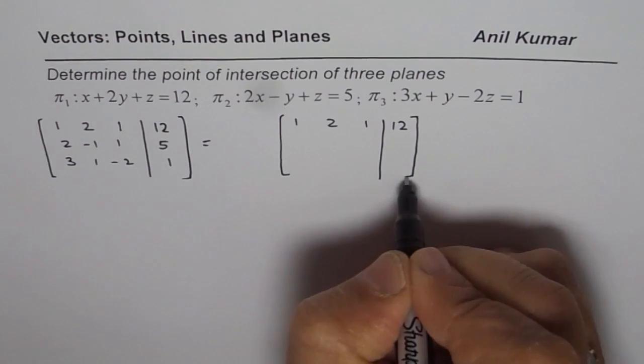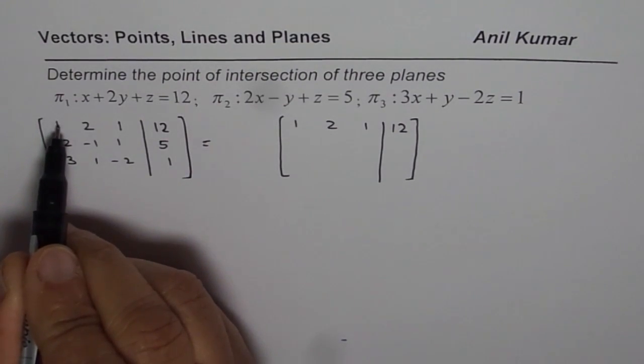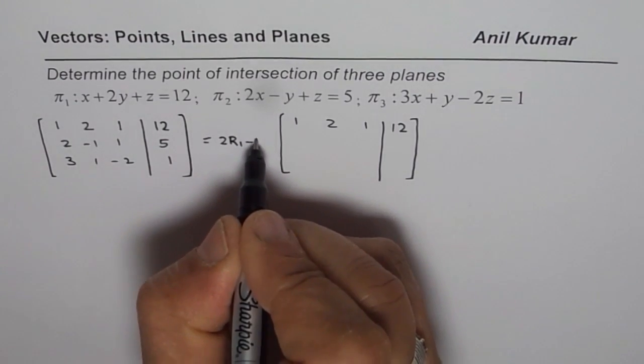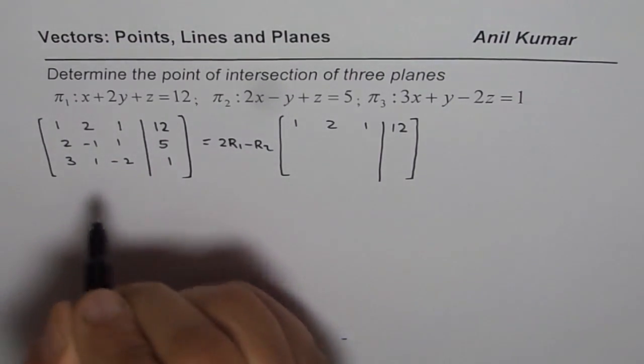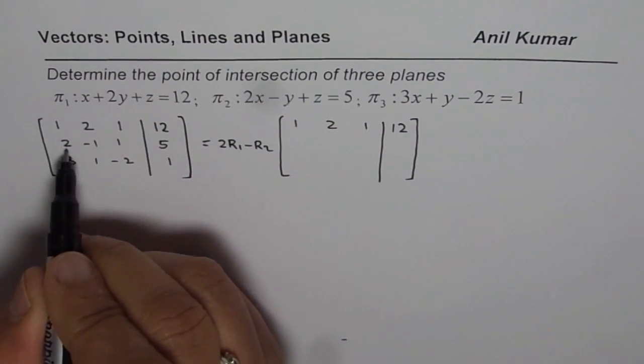Now to get a zero here, we can multiply R2 by R1 by 1. So we can do 2 times R1 minus R2 to get zero here. So let us do it. 2 times this row, 2 - 2 is 0.